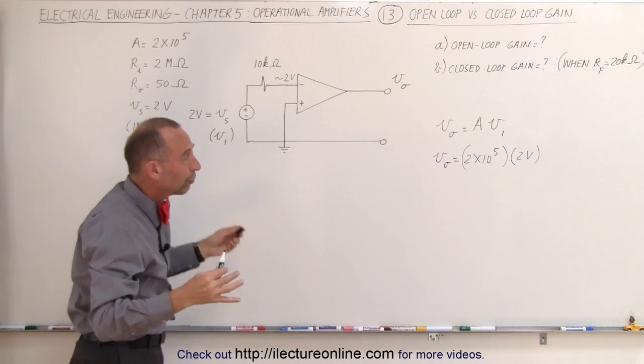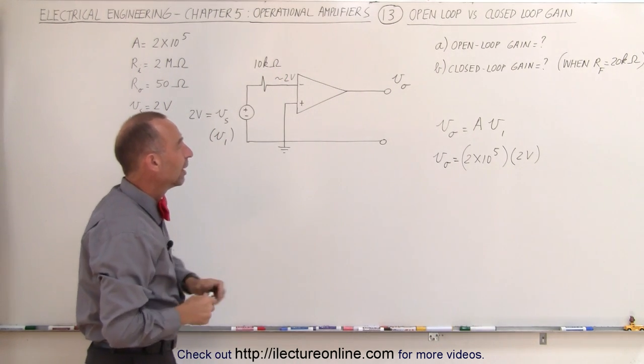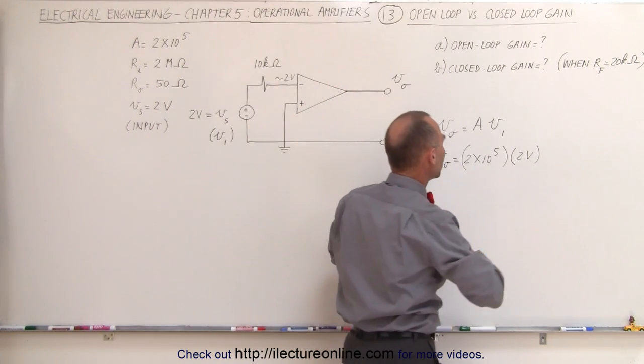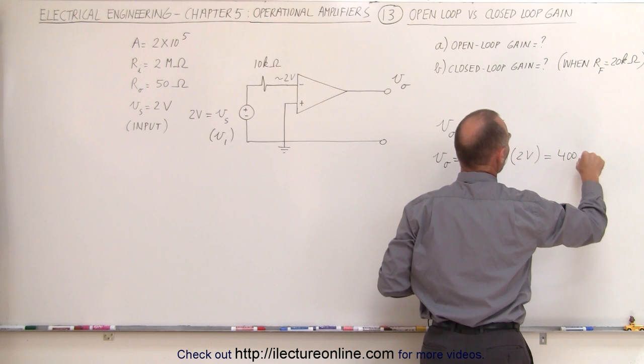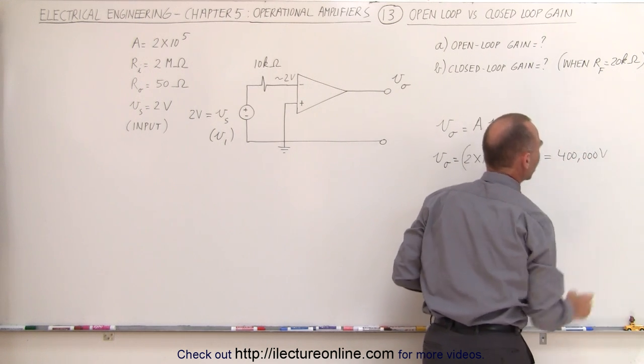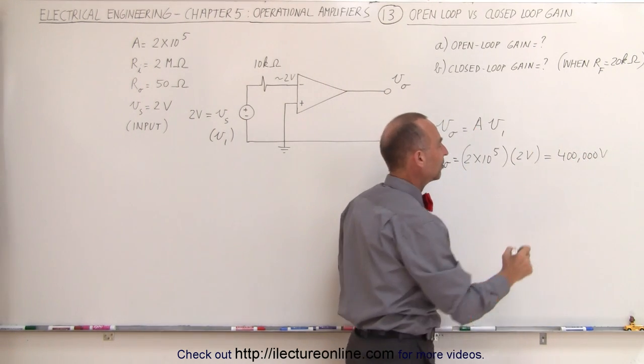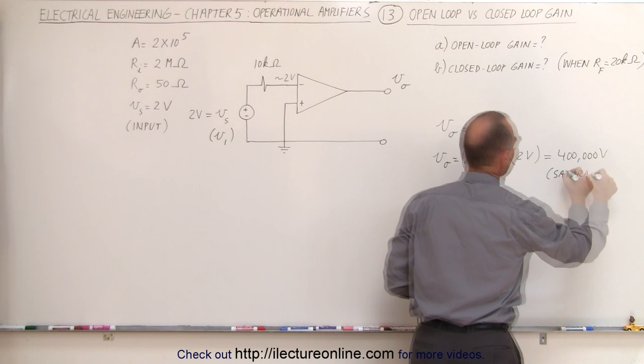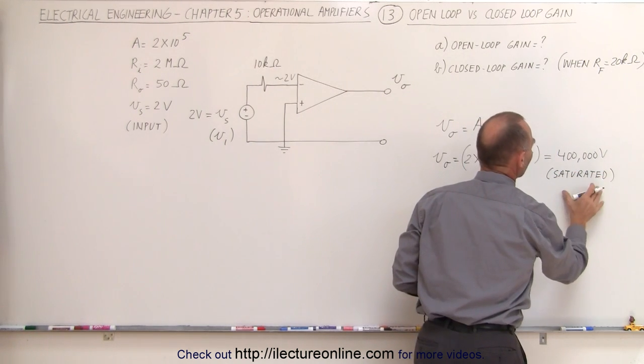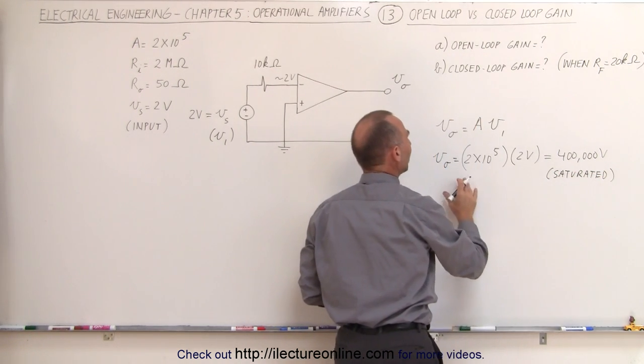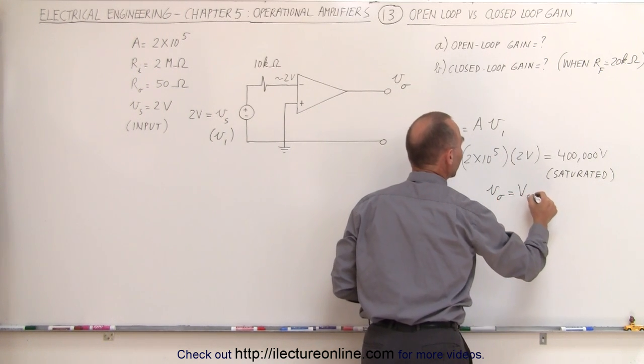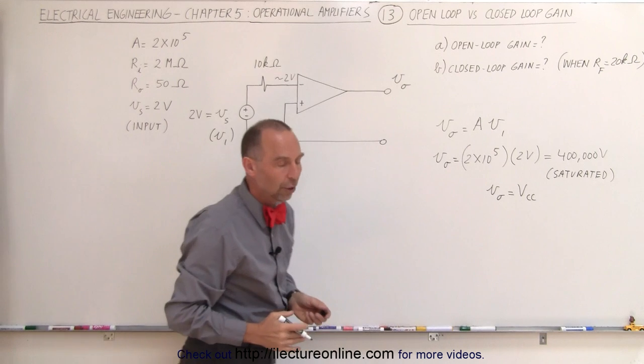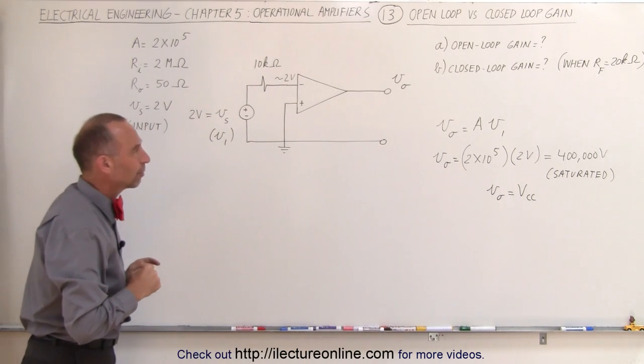Just slightly less than 2 volts but close enough to 2 volts in such a way that this equation then means that the output voltage would have to be equal to 400,000 volts. Now of course that's not going to be the case. That means we are saturated and that the output voltage will simply be limited by the V_cc so V output will then be equal to whatever the V_cc is, 5 or 10 volts, whatever the voltage of the power supply is.